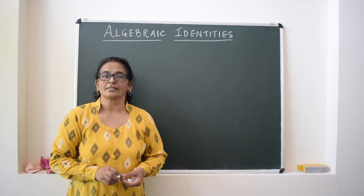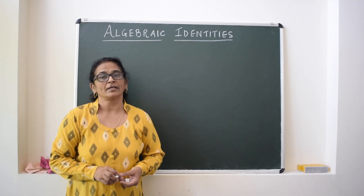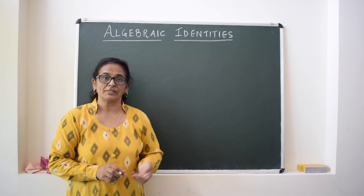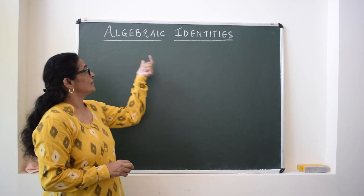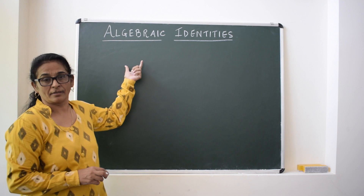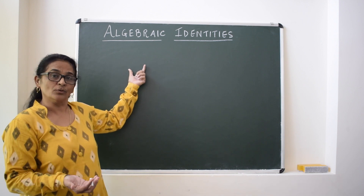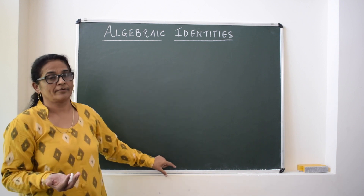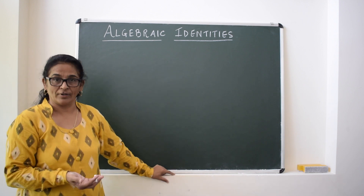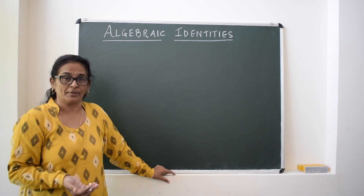In this lecture we will discuss algebraic identities — the identities which are in algebra. An identity is a general rule which we can apply for different types of values or numbers.